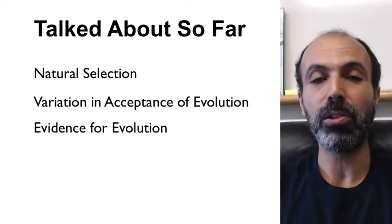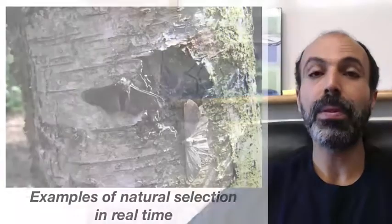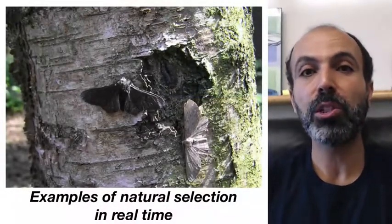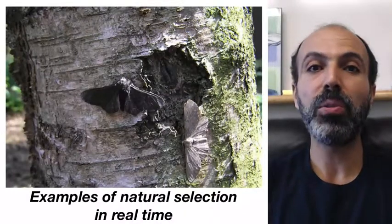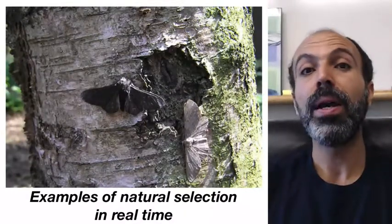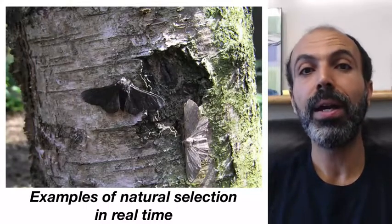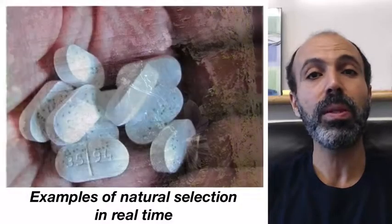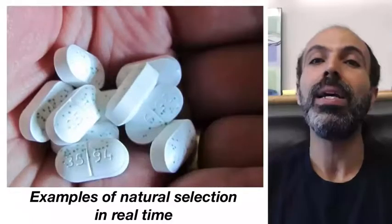I'll recap that in just a second. In this video, what I'd like to do is respond to some of the criticisms of evolutionary theory that are leveled particularly by the media and by non-scientists. To recap some of the points we've already raised: we've seen examples of natural selection in real time. For example, the case of the peppered moth and the change in its color over time in Great Britain and other parts of the world. We've also seen the same sort of thing with respect to antibiotic resistance in various bacteria.